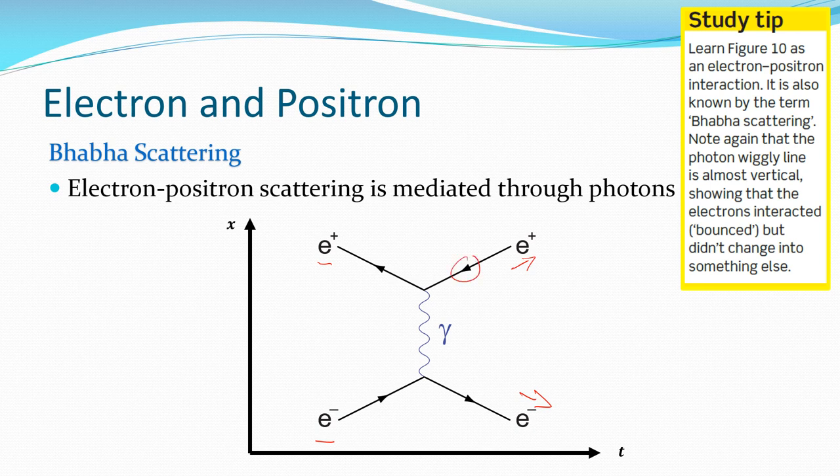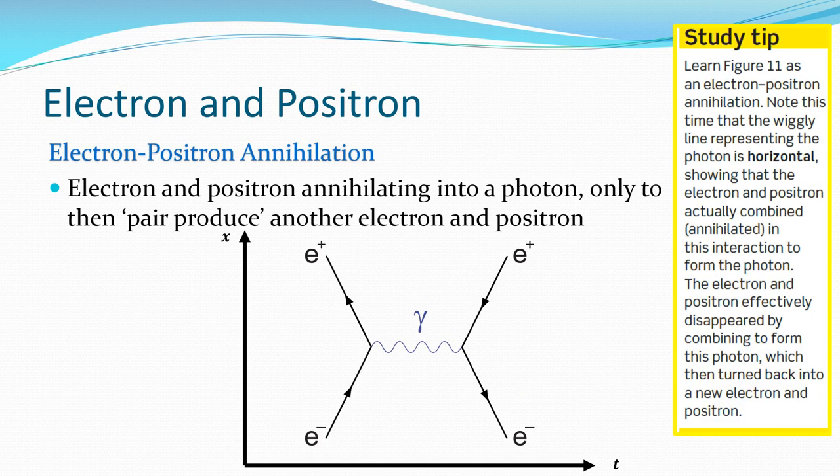But note, it's antimatter, so we're showing its arrows going backwards in time. We don't mean the positrons traveling backwards in time. We're just saying that's how we show the antimatter. And it's like they're bouncing off each other. They didn't change into anything else. In this case, the two didn't combine with each other and annihilate to form photons of light. But it's just a possible interaction. And again, learn this one.